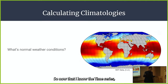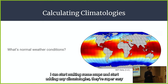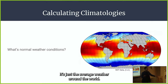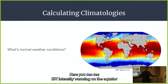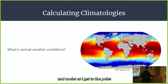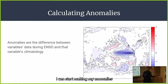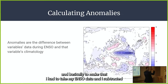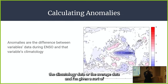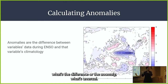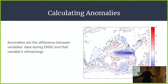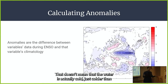With a time series in hand, I started making maps. First, I made climatologies — basically the average weather around the world. For example, SST tends to be warmer on the equator and cooler toward the poles. Then, to make anomaly maps, I took my ENSO data and subtracted the climatology, giving me the difference from average. So on an SST anomaly map, a cooler color doesn't mean the water is actually cold — it just means it's colder than normal.